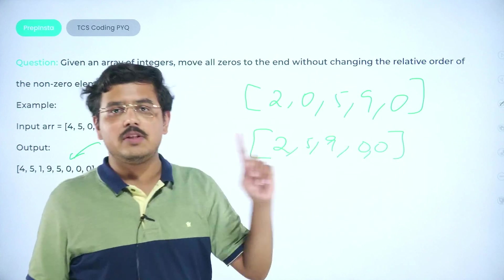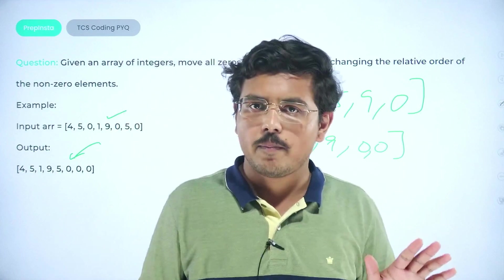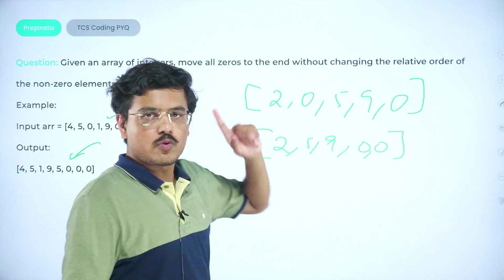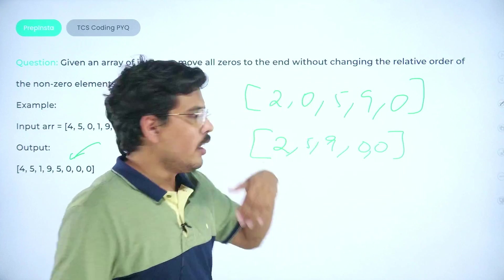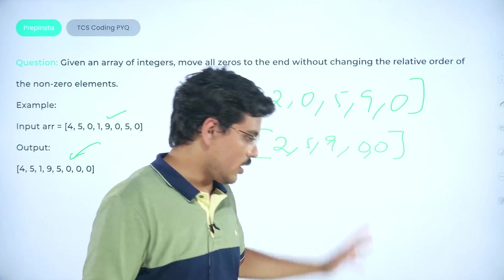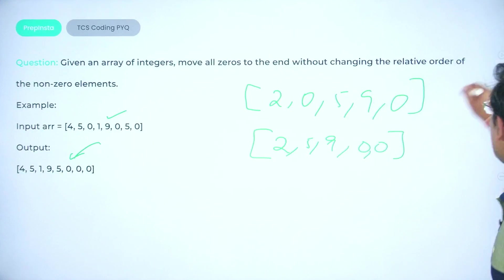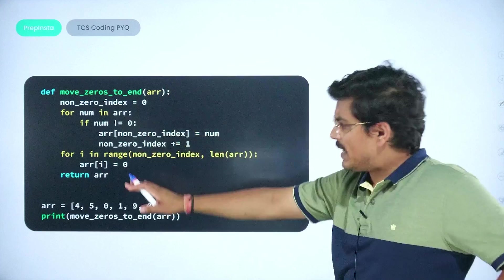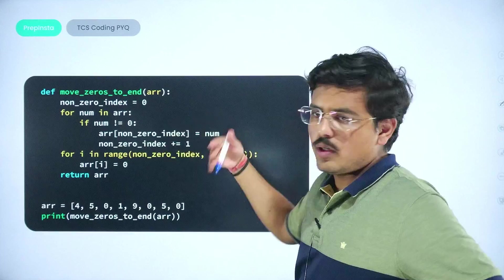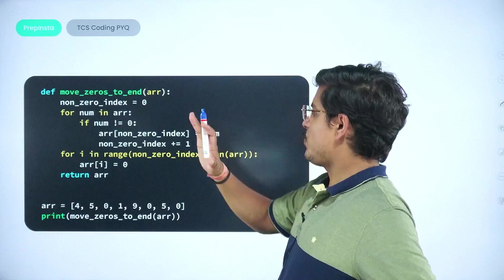First of all, the size of the array should not be altered. If the array is containing five elements it should not contain six elements, number one. Number two is the order of these non-zero elements should not change. So first was two which was non-zero, then another non-zero was five, then another non-zero was nine. This is a quite famous question of previous year which has repeated often. I have written a complete code here, this will help you in actually checking out a few things.